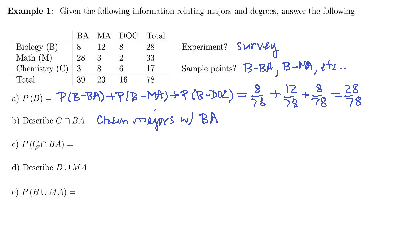So the probability of C intersect BA. Well, those three people are in the overlap of the row for C and the column for BA. So this is going to be three out of 78.